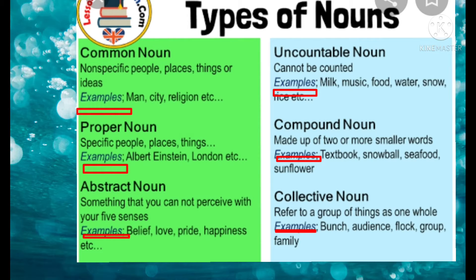Proper noun refers to specific people, places, or things. For example, Madurai city — Madurai is a specific name given to a particular place, so Madurai is a proper noun. And city is a common noun.